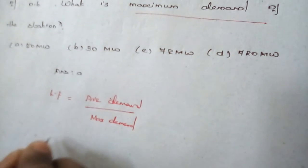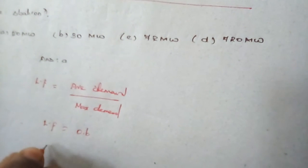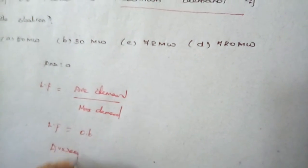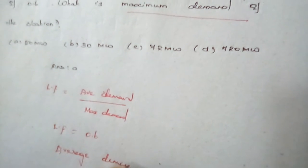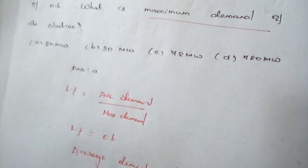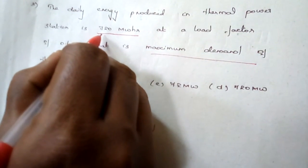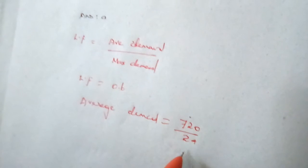Given: load factor equals 0.6. First, find the average demand: average demand equals daily energy produced divided by 24 hours. The daily energy produced is 720 megawatt-hours, so average demand equals 720 divided by 24, giving a value of 30 megawatt.